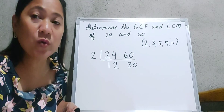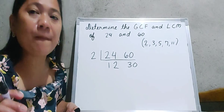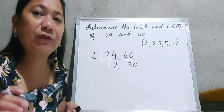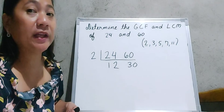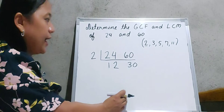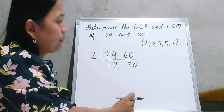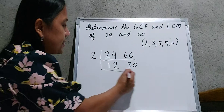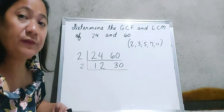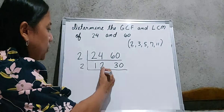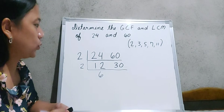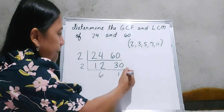Since our quotients are still composite numbers, we will continue to divide using a prime number divisible by both 12 and 30. We use 2 again since they are both even numbers. 12 divided by 2 is equal to 6, and 30 divided by 2 is 15.